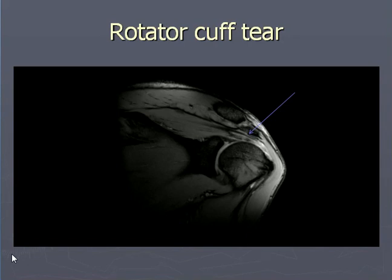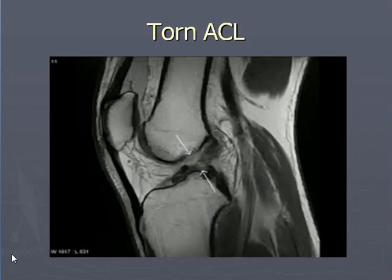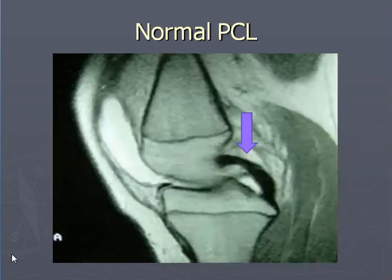Rotator cuff tear. Ultrasound can pick up rotator cuff tears very well, but MR has the superior edge where you can see the other structures in one image. The arrow depicts a partial thickness tear of the supraspinous tendon. This is also a case of Bankart and Hill-Sachs lesion along with effusion in the shoulder joint. This shows near complete rupture of the anterior cruciate ligament — there is loss of normal signal through the anterior cruciate ligament. The posterior cruciate ligament is normal, showing dark signal or low intensity which is a normal finding.